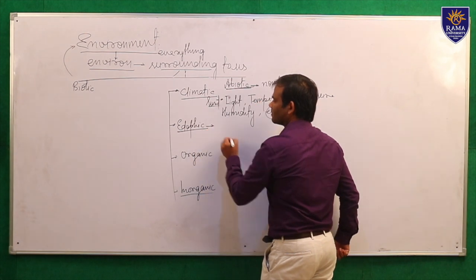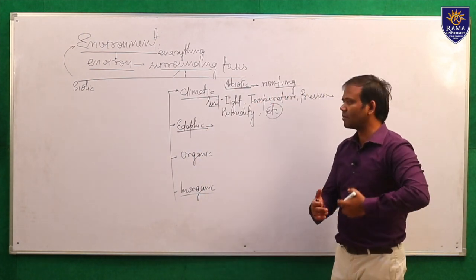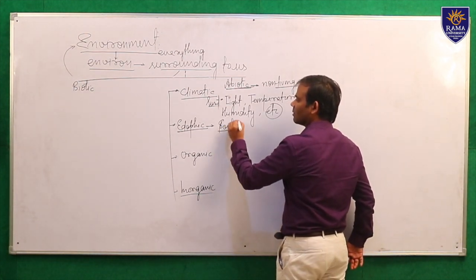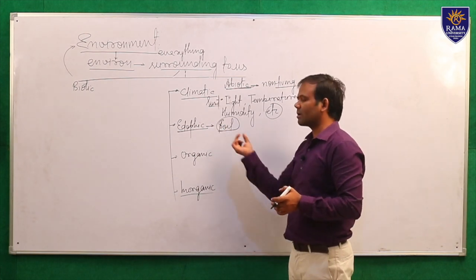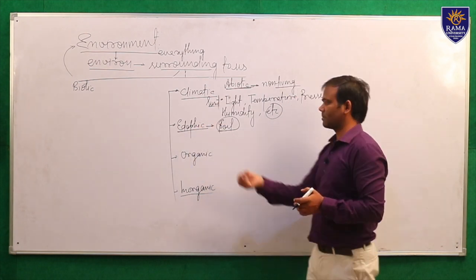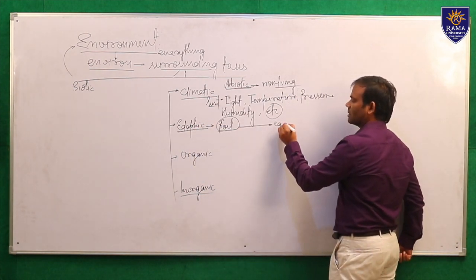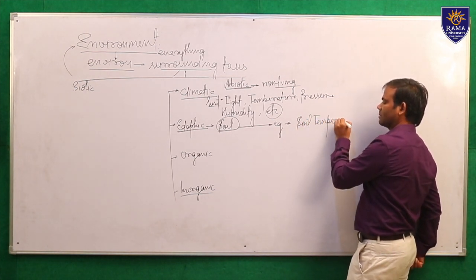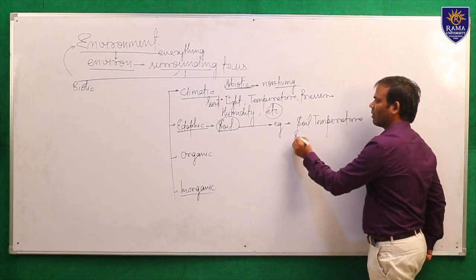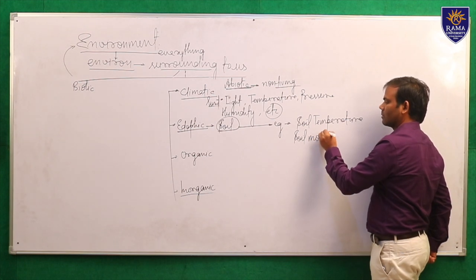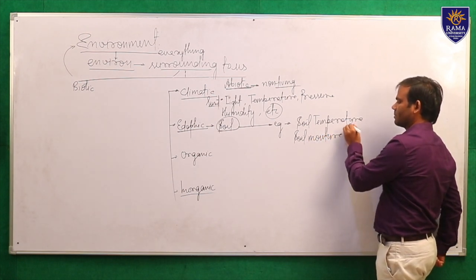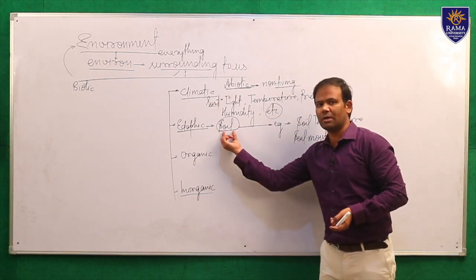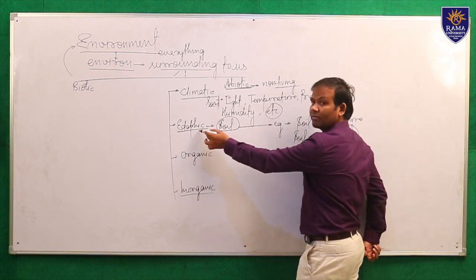What is edaphic? Those factors which influence the soil come under the category of edaphic factors. For example, soil temperature and soil moisture, etc. Soil temperature and soil moisture can influence soil properties, that is why they come under the category of edaphic factors.